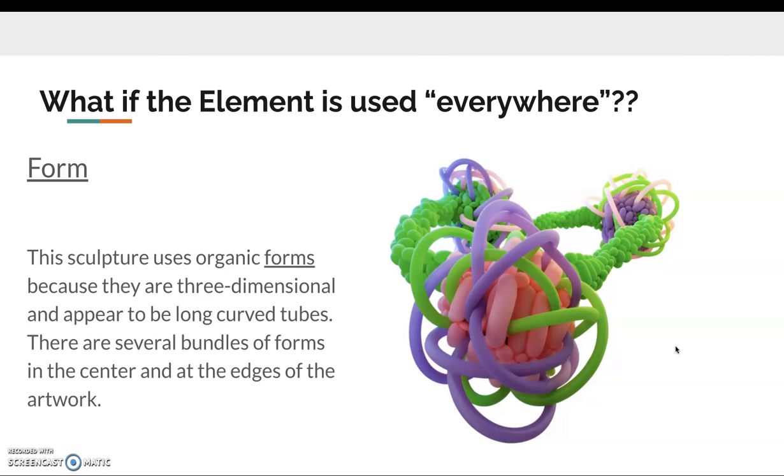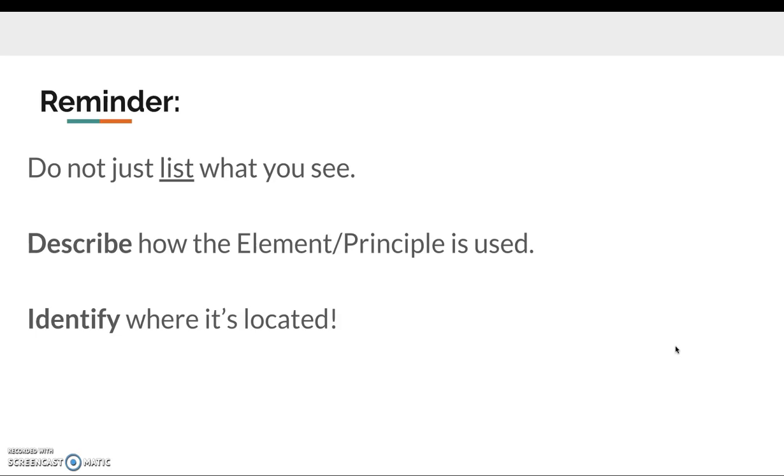Hey, another example. This one obviously uses organic forms, they're all tubes. So this sculpture uses organic forms because they are three dimensional and appear to be long curved tubes. Like there's forms everywhere. There are several bundles of forms in the center and at the edges of the artwork. So I'm pointing out, hey, there's actually bundles of forms. Yes, it's made of form, but this is where I'm seeing some of them.